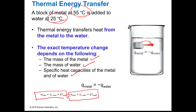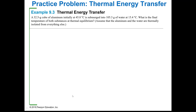The metal one is positive because it's the higher one. So we set those two equations, which you've already seen, equal to each other, and then we can make some decisions and figure out what's going on in a system. My example is a 32.6 gram cube of aluminum initially at 45.8 degrees C, submerged in 105.3 grams of water at 15.4 degrees C. What is the final temperature of both substances at equilibrium?